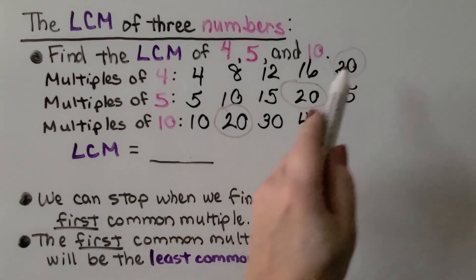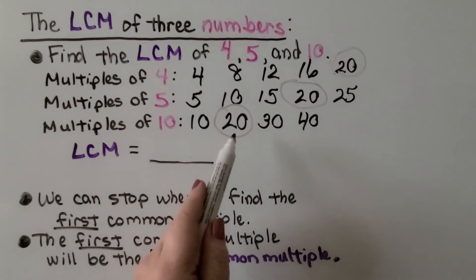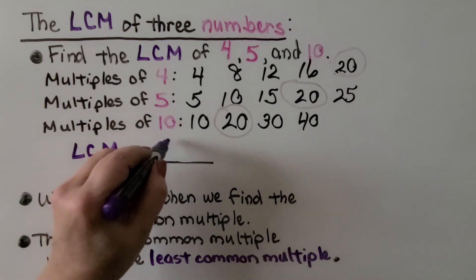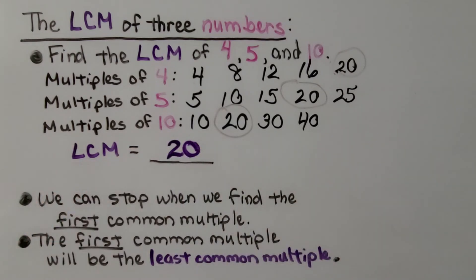We already found that all three can meet at 20, which means the LCM for 4, 5, and 10 is 20. We stop when we find the first common multiple. That will be the least common multiple.